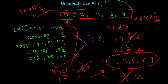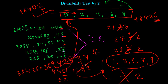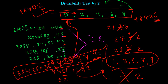So any number you choose, like 3,842,603,849,283,47 — at the end, what is the last digit? It is 7. Since 7 is an odd number, it does not end with 0, 2, 4, 6, or 8 — it's not an even number — so this number is also not divisible by 2.